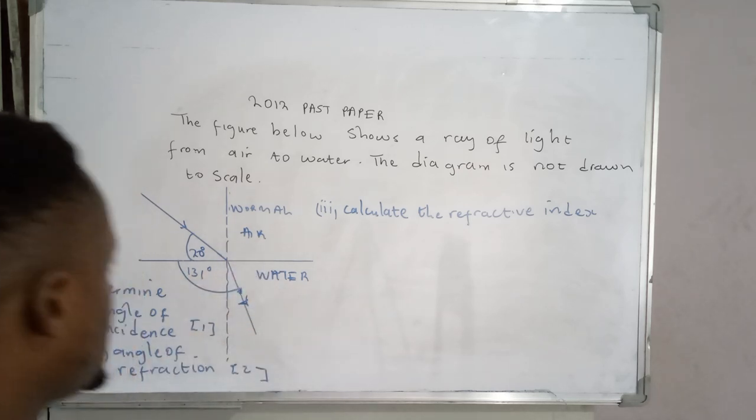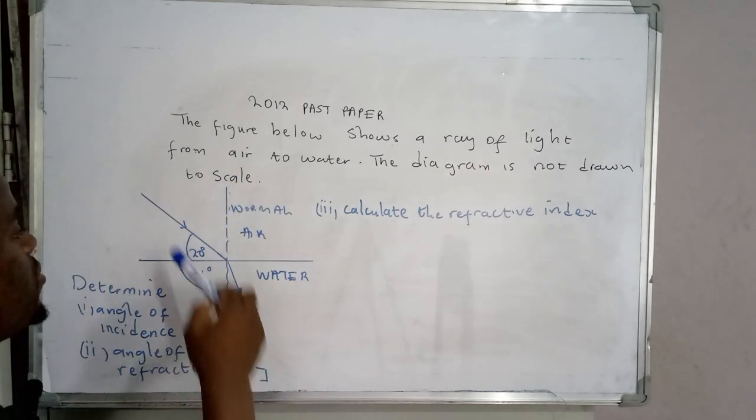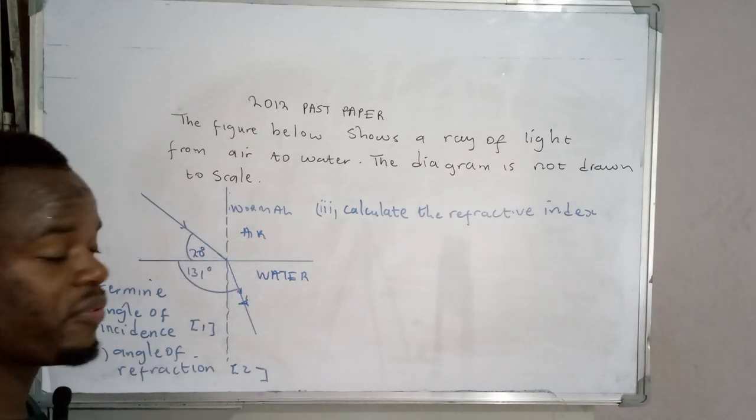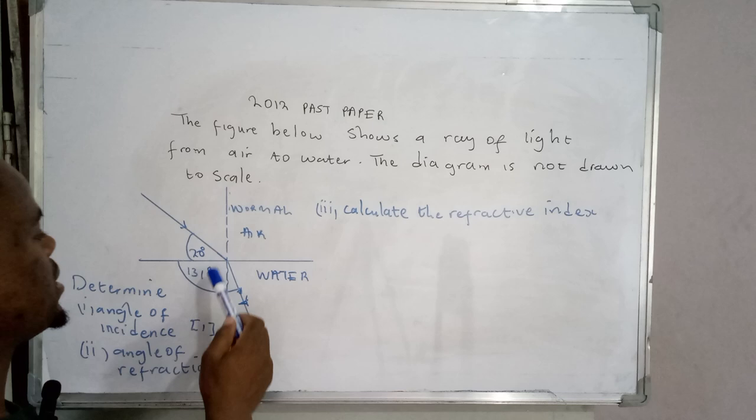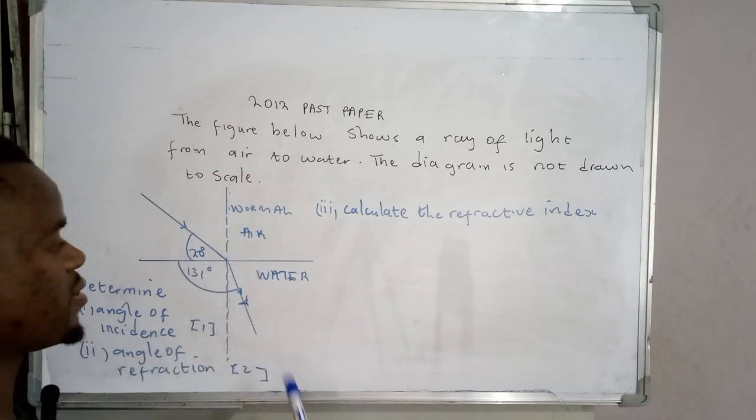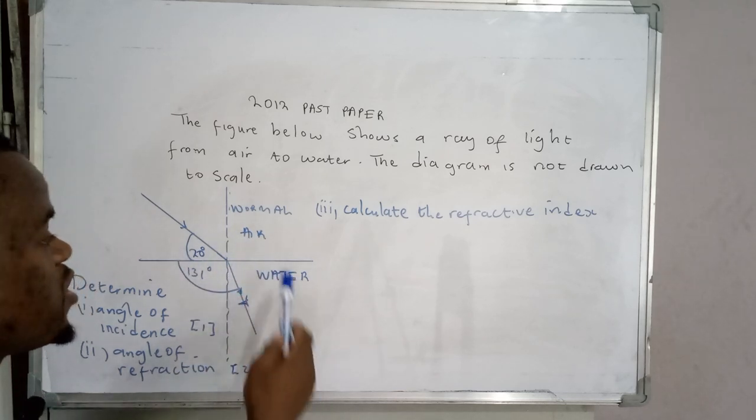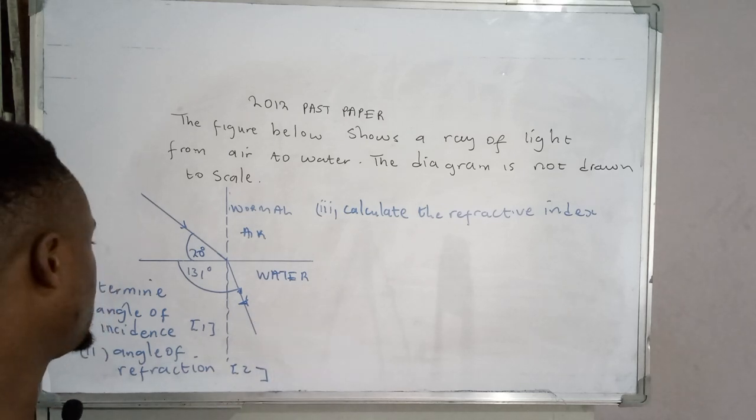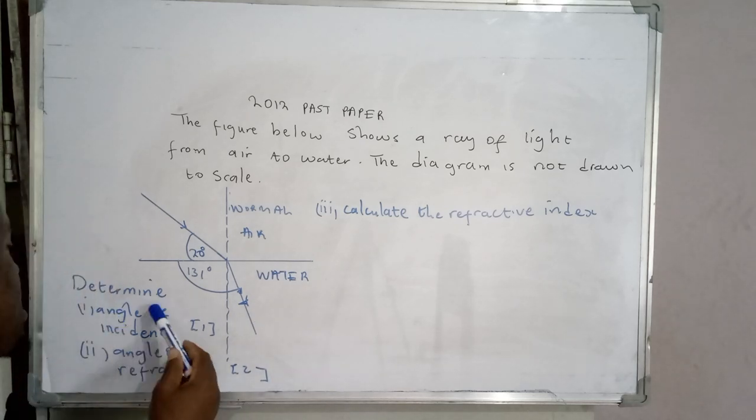So what is the question? We have the normal, we have the incident ray, the refracted ray, and then we have those angles. The first medium is air, the second medium is water. The question is to determine the angle of incidence.